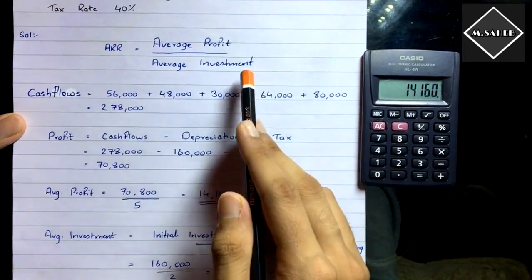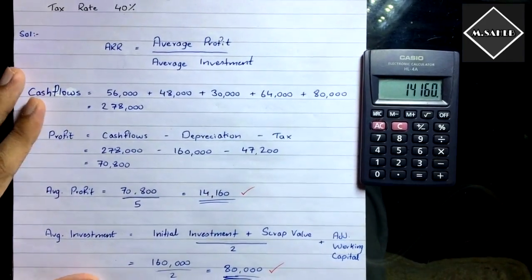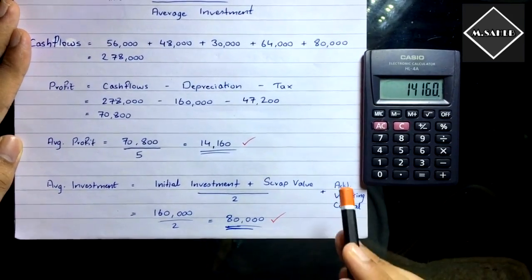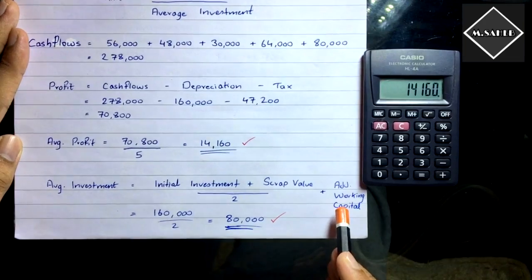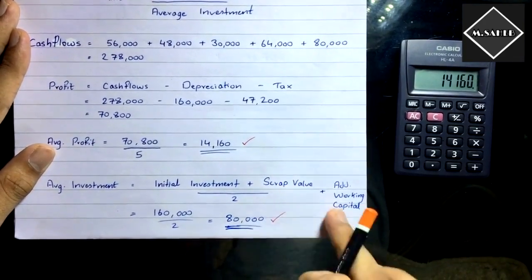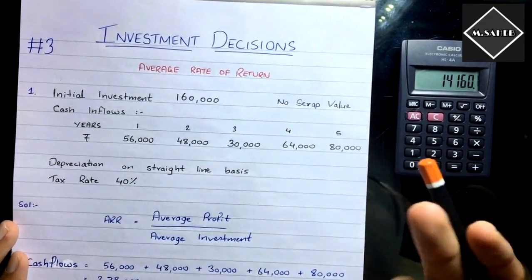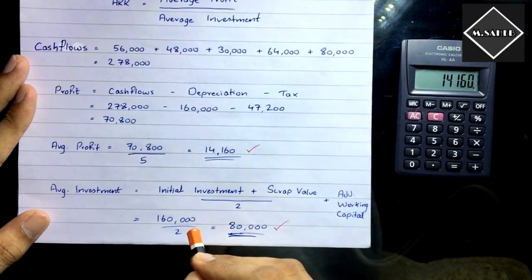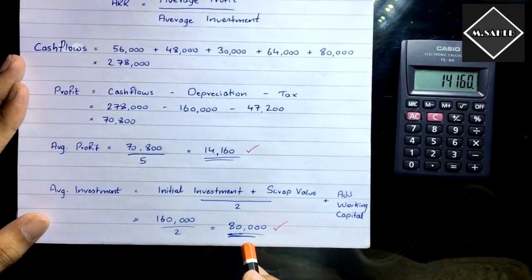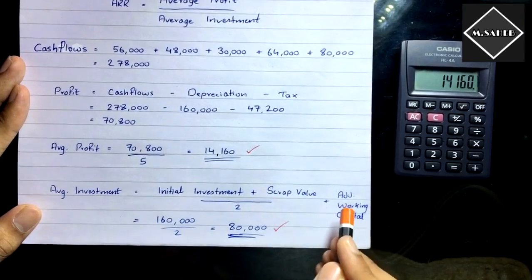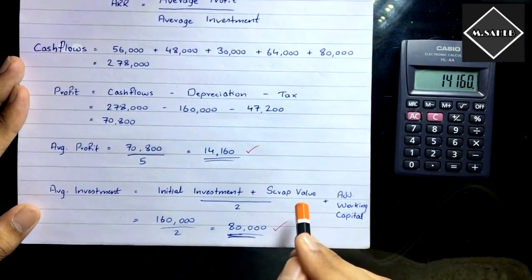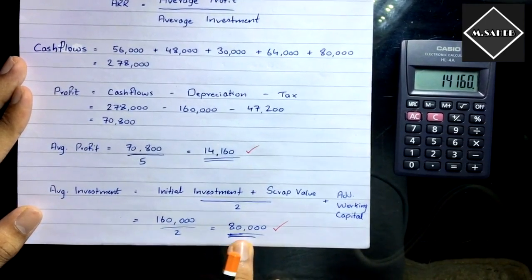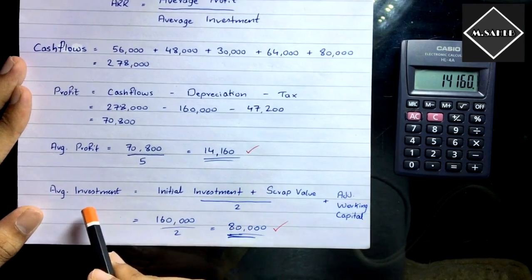Now we calculate average investment. The formula is: (Initial Investment + Scrap Value) / 2 + Additional Working Capital. In this question there is no scrap value and no additional working capital, so we only use the initial investment: 1,60,000 / 2 = 80,000. Average investment = 80,000.